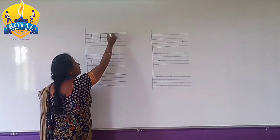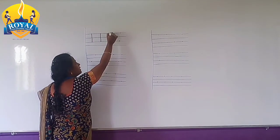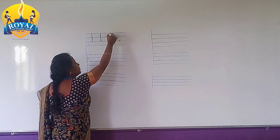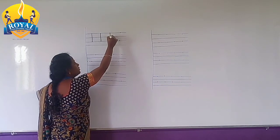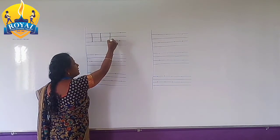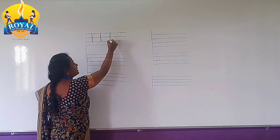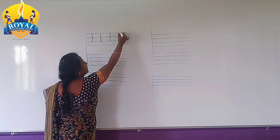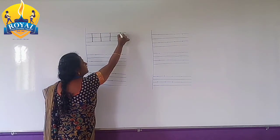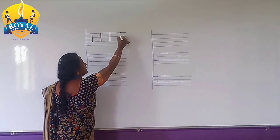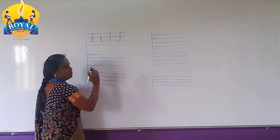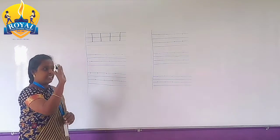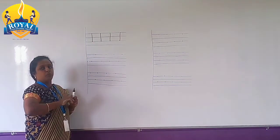Put the pencil to the headline, come down to the second middle line. It's called a standing line. What is this? Standing line. Standing line — straight up.